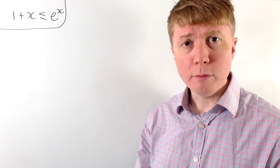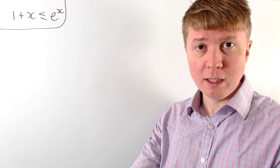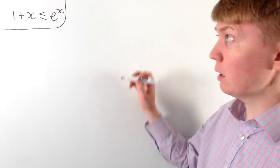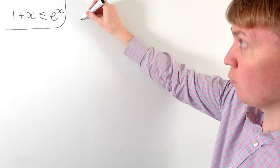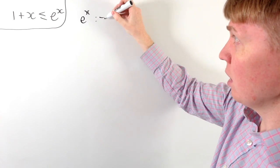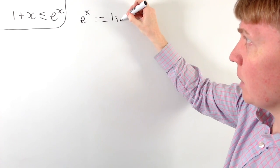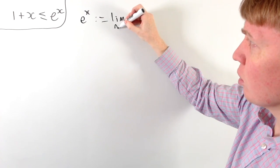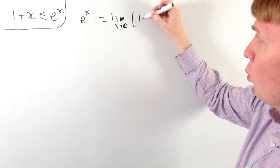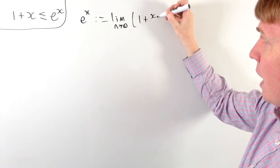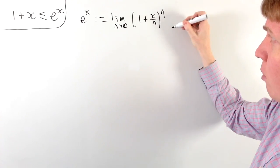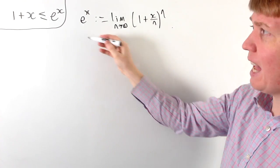Our first proof relies on the limit definition of e to the x. We can define e to the x for any real number x as the limit as n goes to infinity of 1 plus x over n, all raised to the power of n.